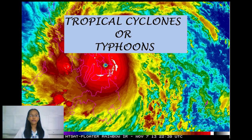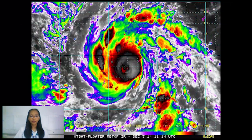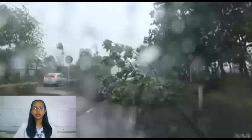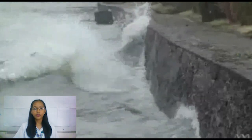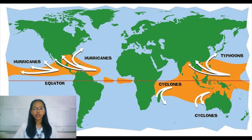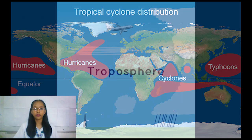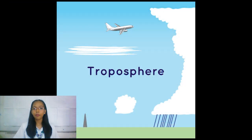Let's define first what a tropical cyclone is. A tropical cyclone is a rapidly-rotating storm system characterized by a low-pressure center, a closed low-level atmospheric circulation, strong winds, and a spiral arrangement of thunderstorms that produces heavy rain. As you can see in the picture, a tropical cyclone is referred to by many names, such as hurricane, typhoon, and cyclone, depending on its location and its strength. Weather disturbances happen in the troposphere.